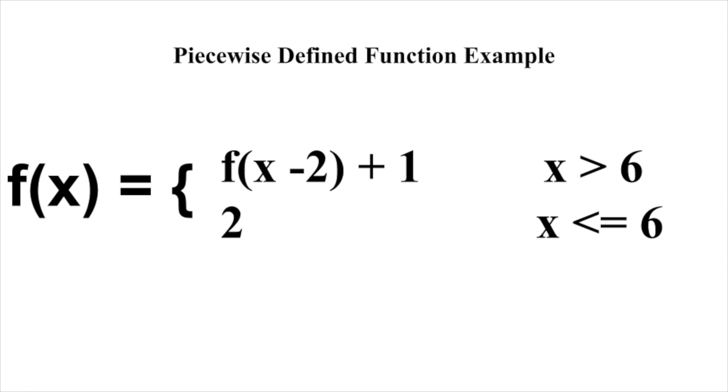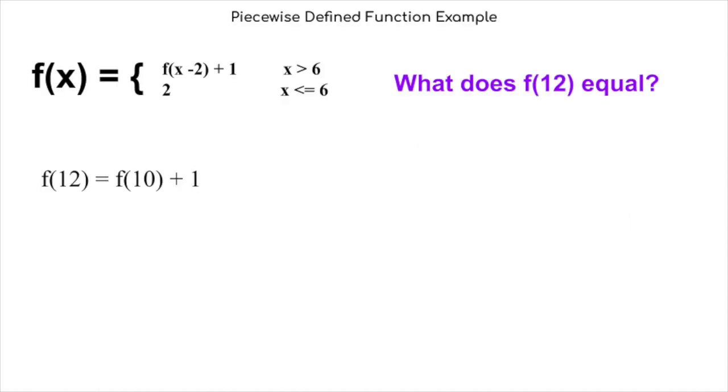First, we can see that we have a function that is made up of two pieces that are defined when x is greater than six, and when x is less than or equal to six. We want to find what f of twelve equals. Now we can begin to simplify. Twelve is greater than six, so it can be put into the first piece of the equation. By subtracting two, we can see that f of twelve equals f of ten plus one.